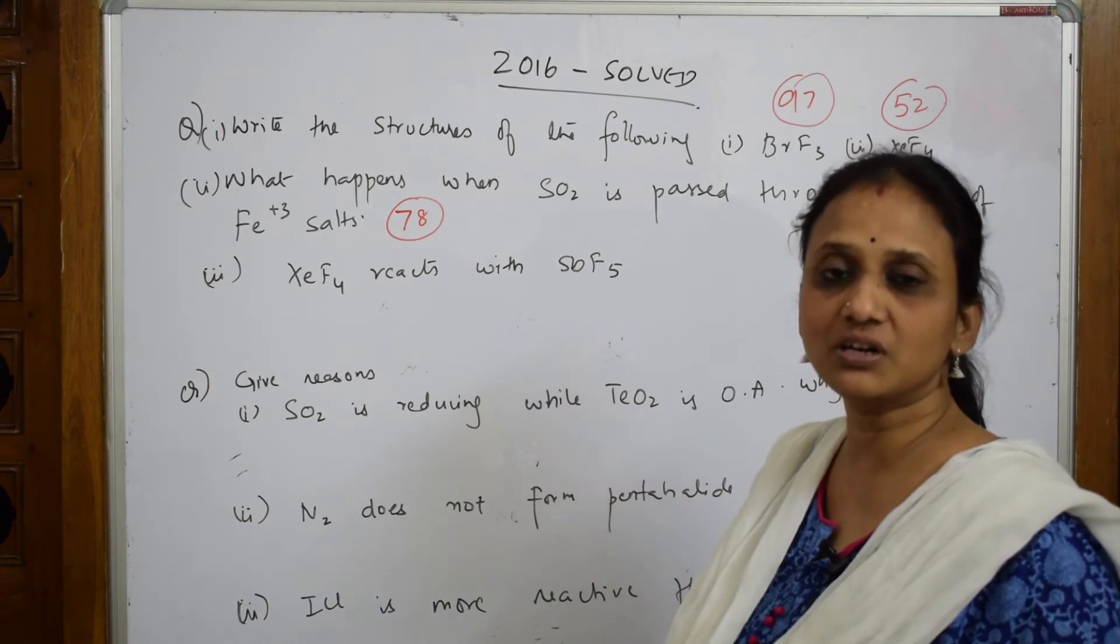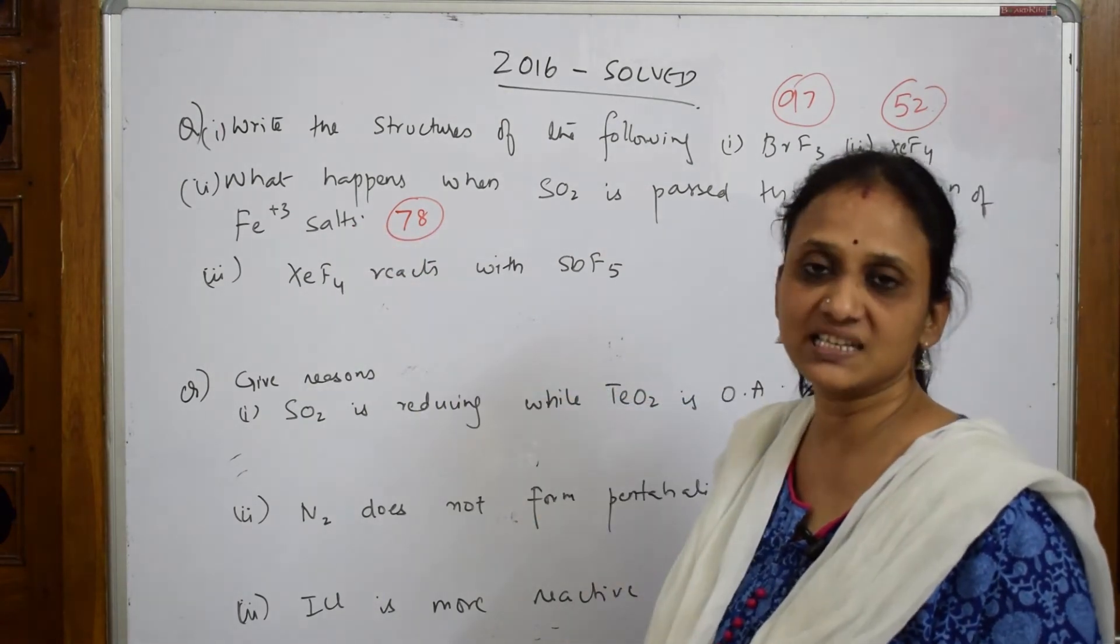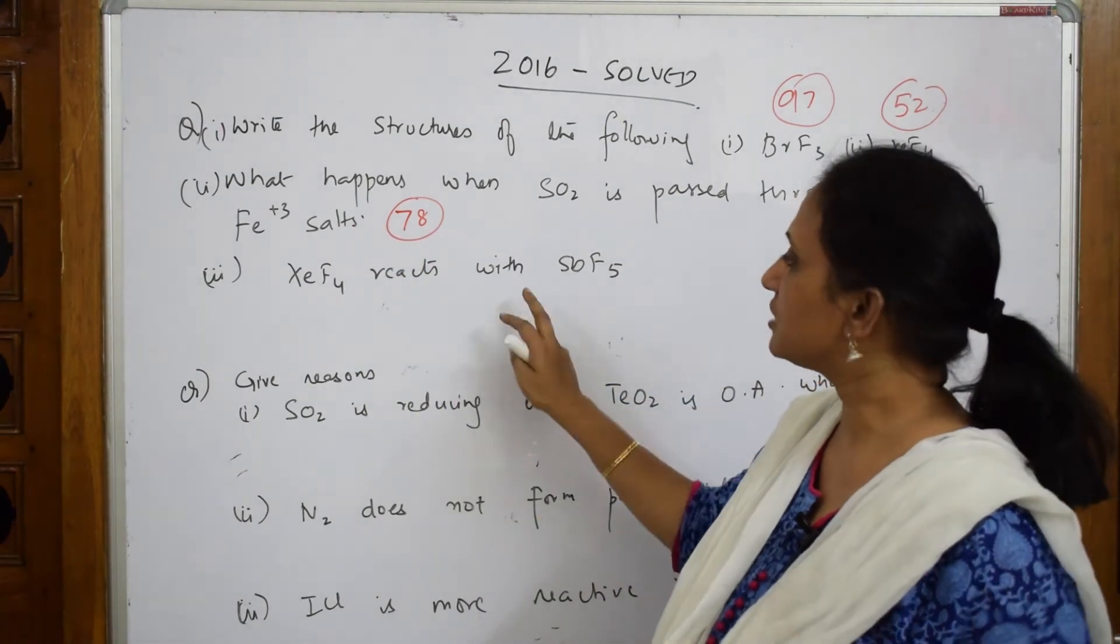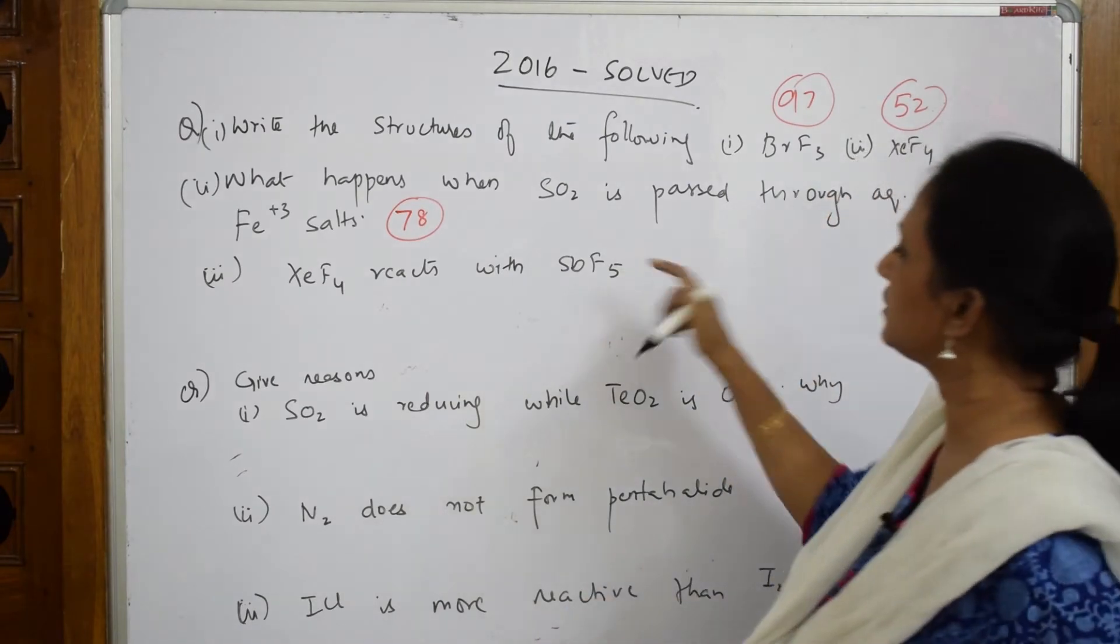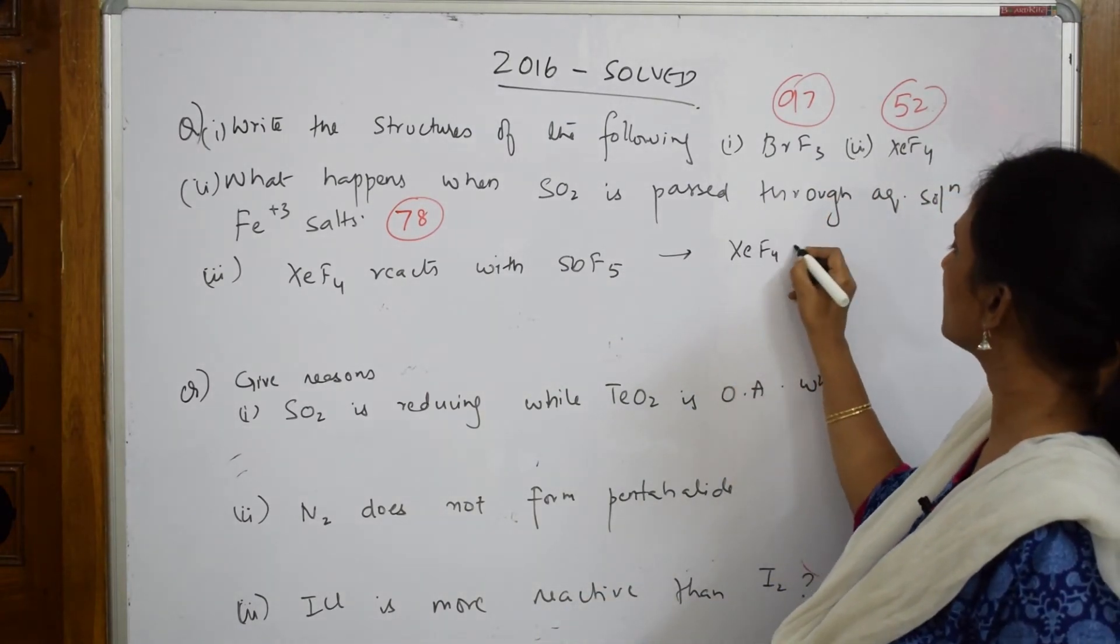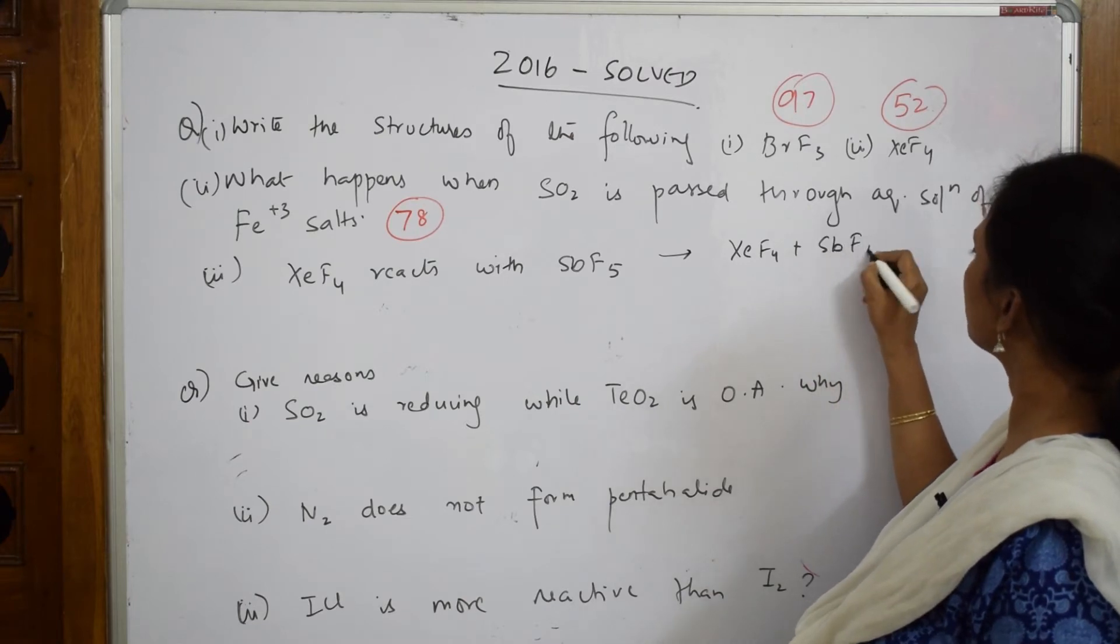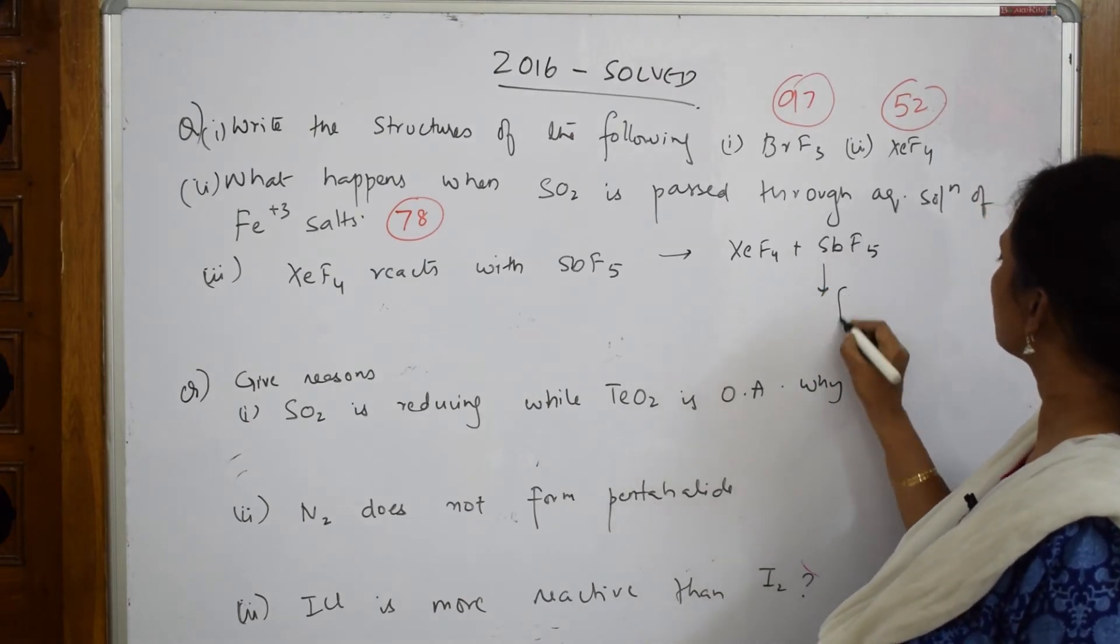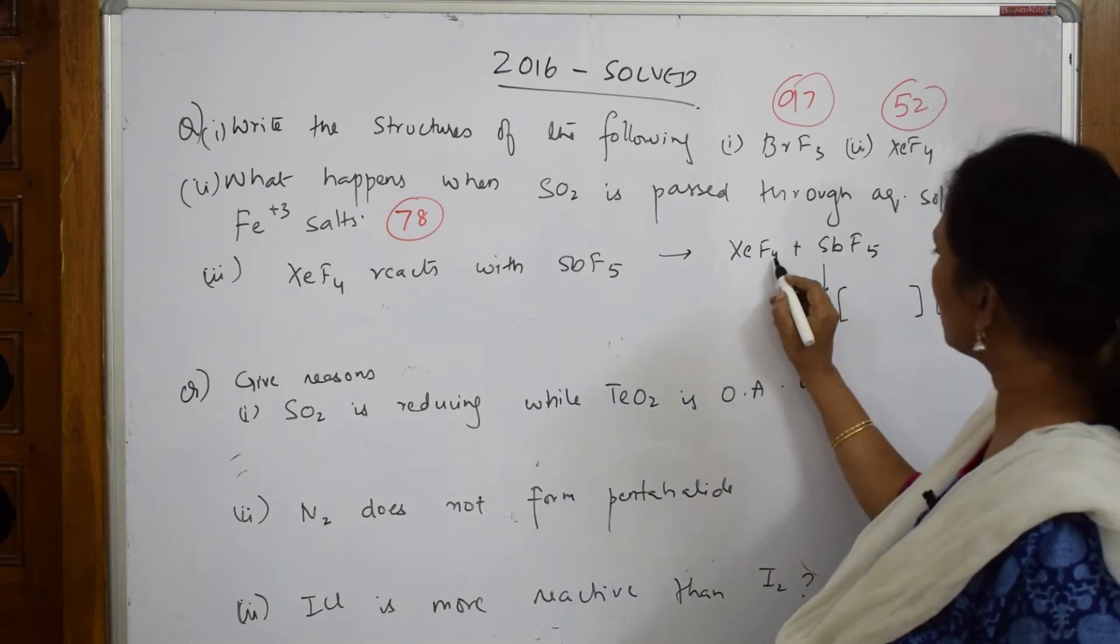Next question: XeF4 reacts with SbF5. A simple equation. This is XeF4 plus SbF5. It's going to form two complexes. Just see, one fluorine from here shifts to this.